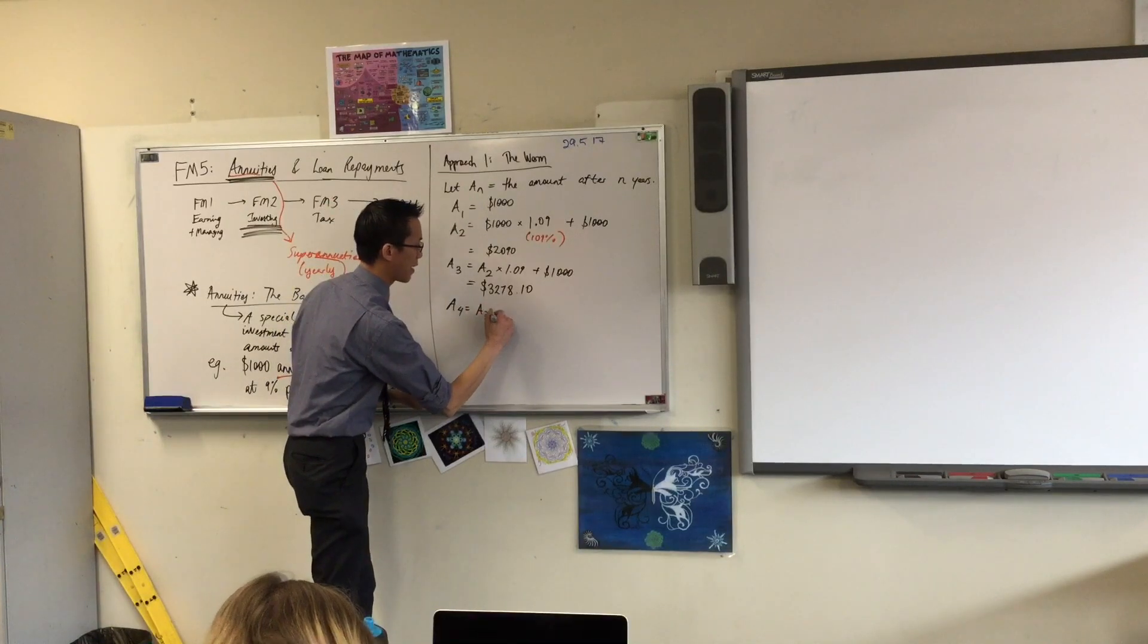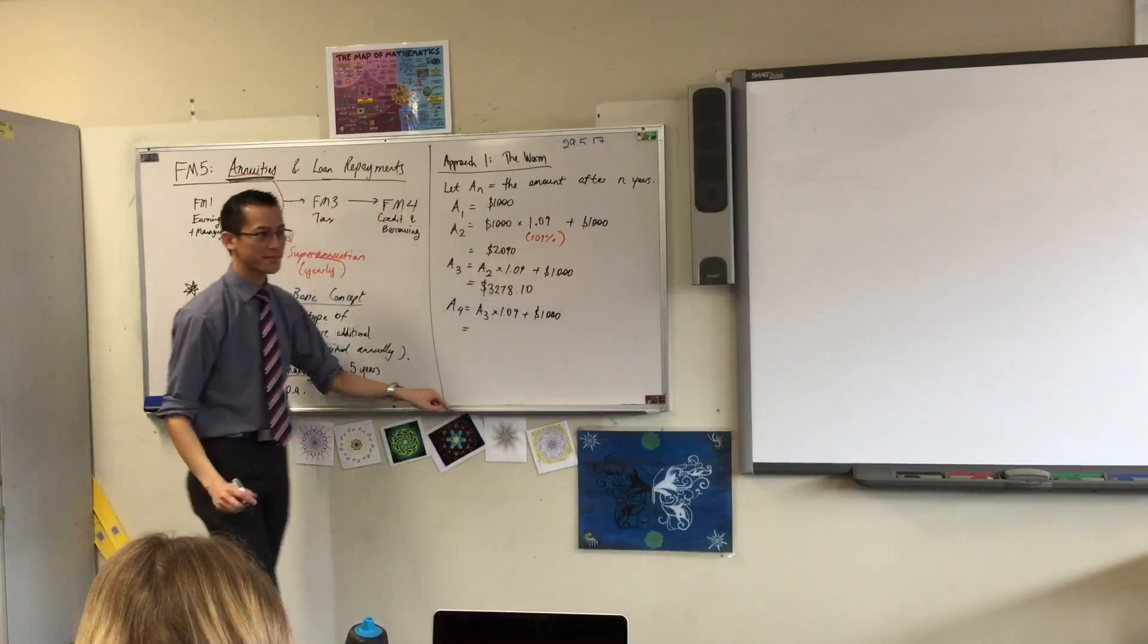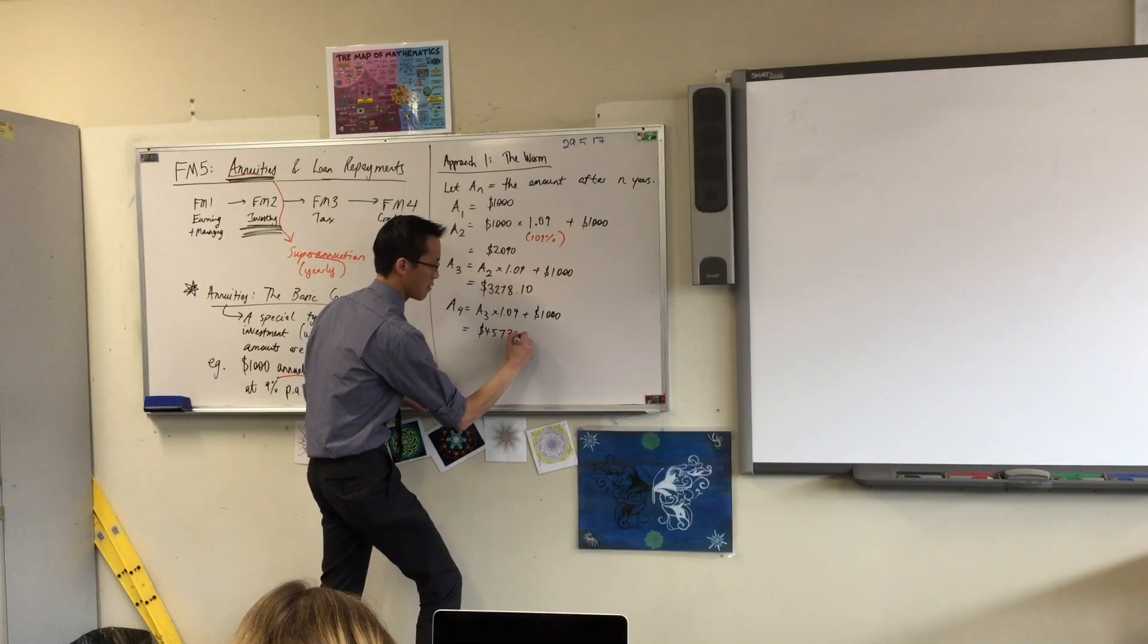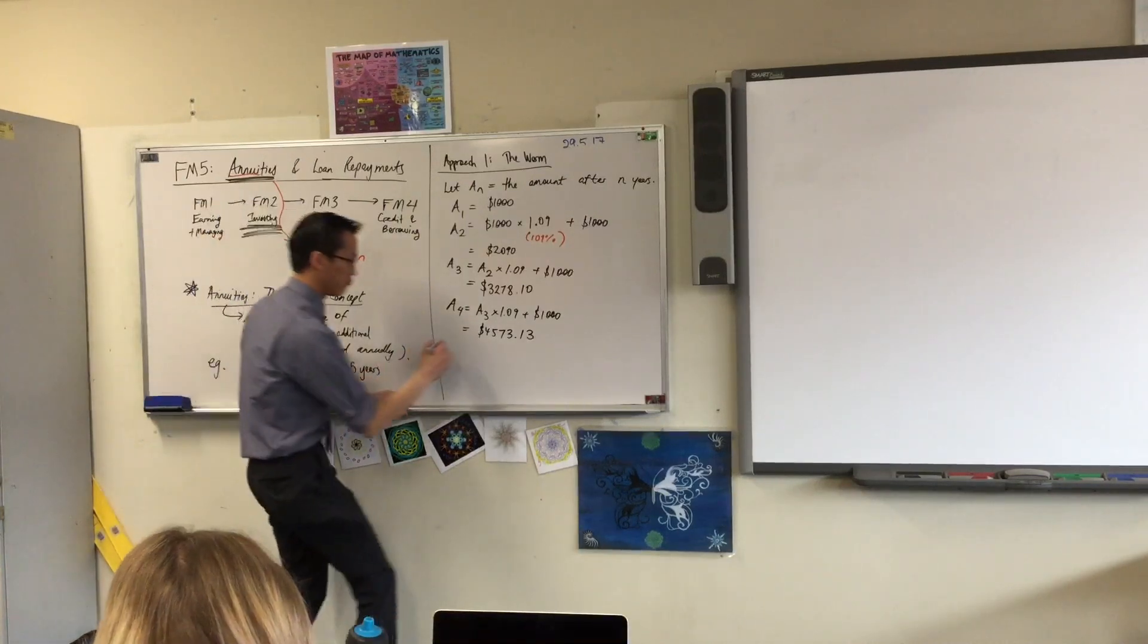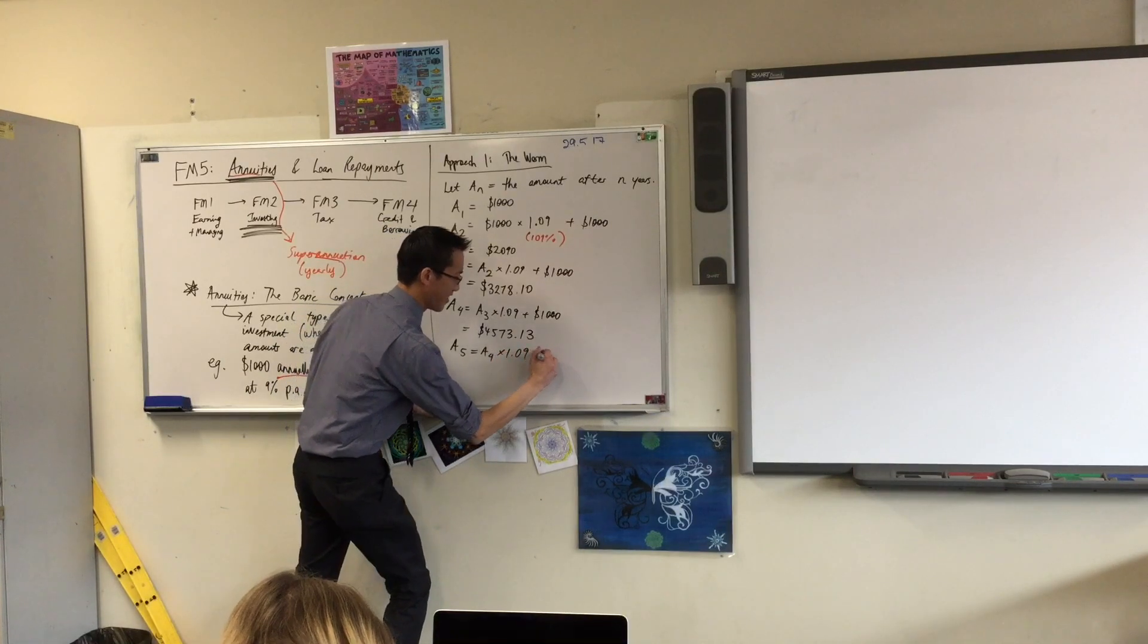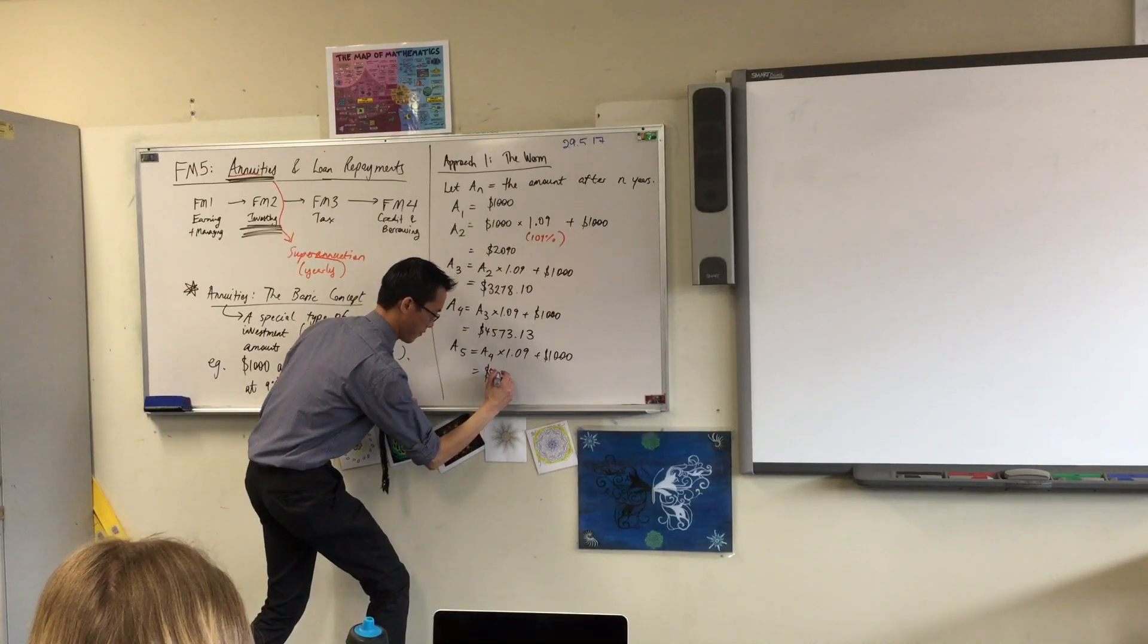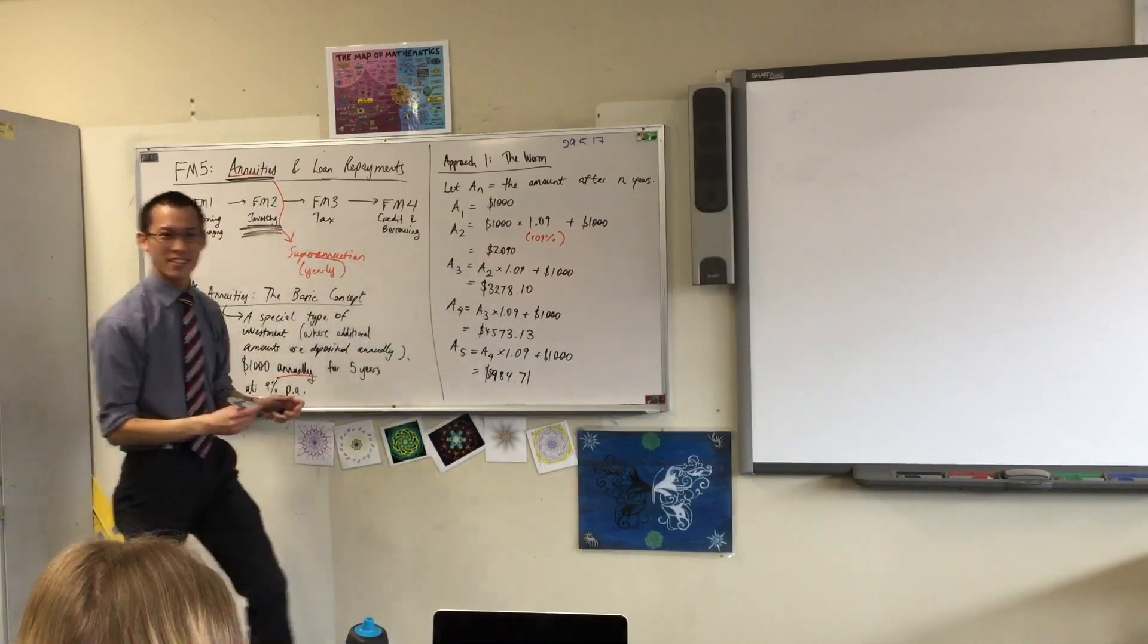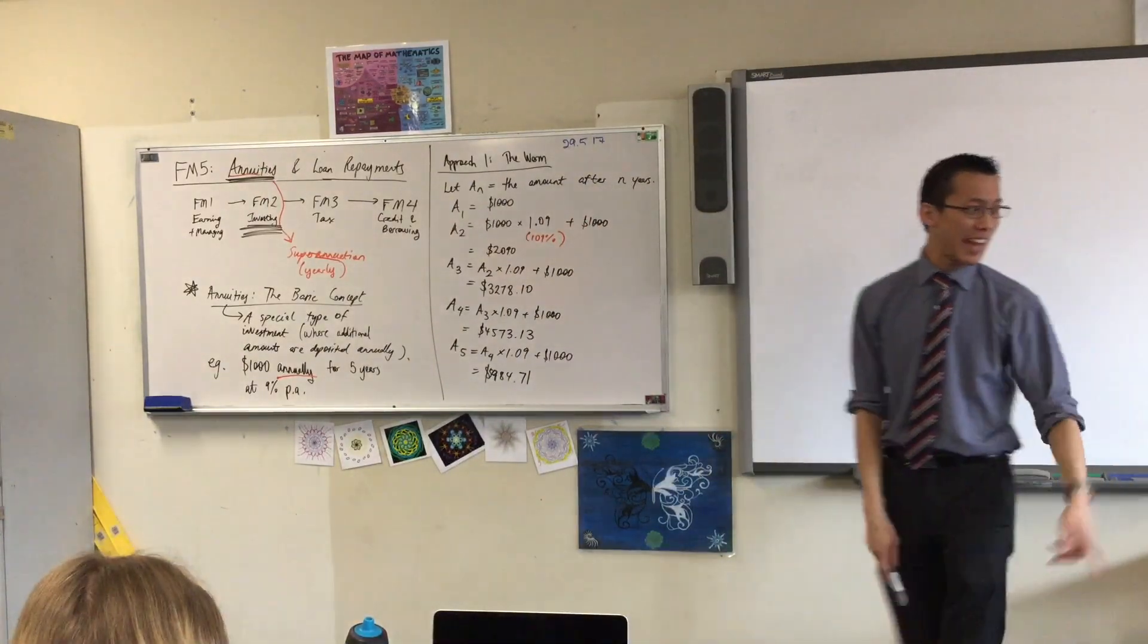Someone write a number for me. 4,573, and if you round it off, it's point 13. And then, last one. 5,984.71. Have we got some agreement on that? Happy?